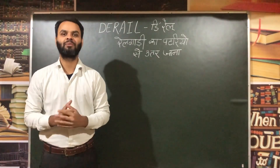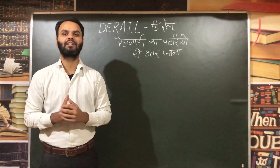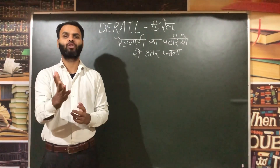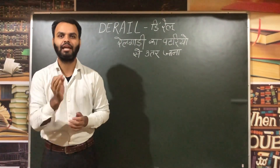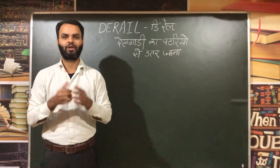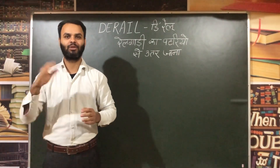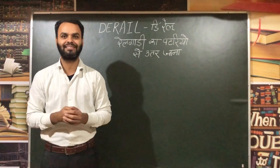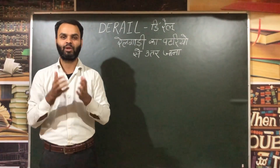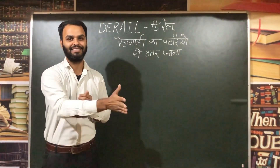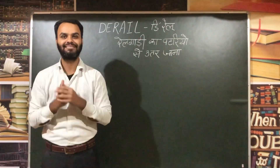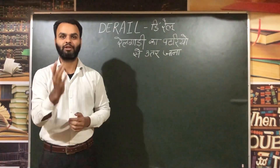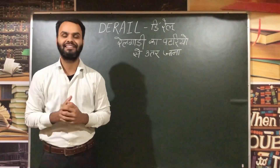Next new word is Derail, and this means rail gauri ka pattiyon se utar jana — for a train to come off the tracks. Friends, let's break Derail: Didi was driving a rail and while driving, she saw lush green fields on both sides. She wanted fresh vegetables, so she took the rail off the tracks and went to the fields to get them. So Derail means pattiyon se utar jana — for a train to come off the tracks.